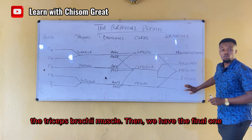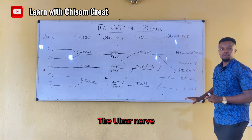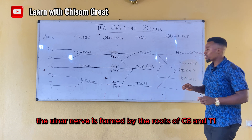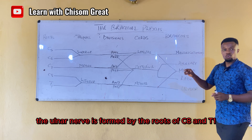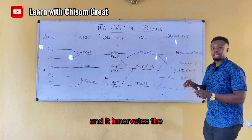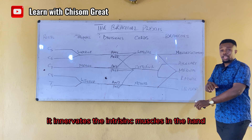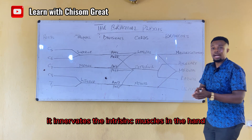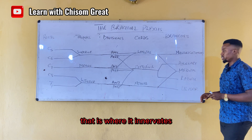The fifth and final nerve is the ulnar nerve. The ulnar nerve is formed by the roots of C8 and T1. It innervates the intrinsic muscles of the hand.